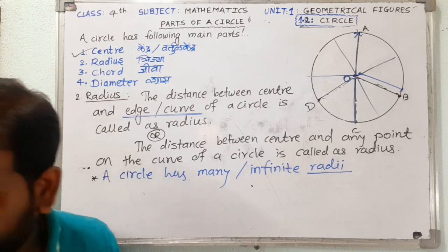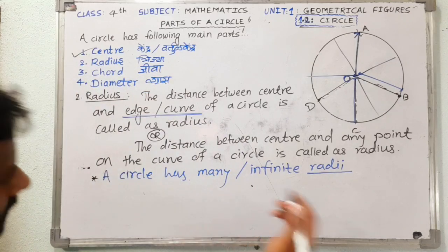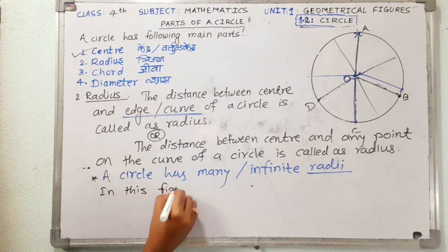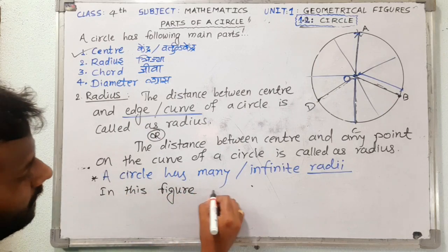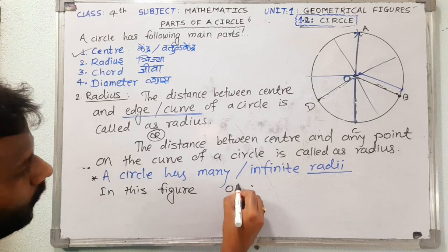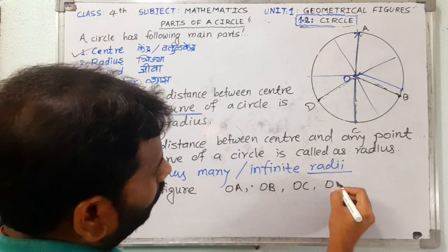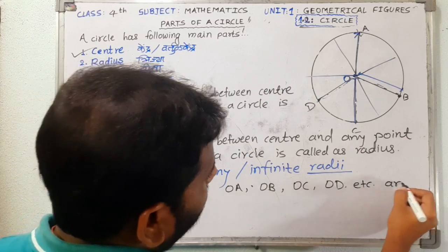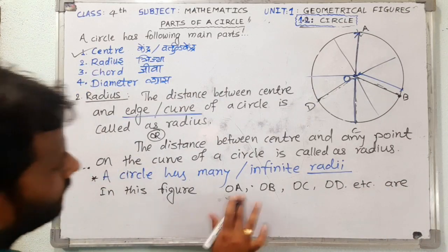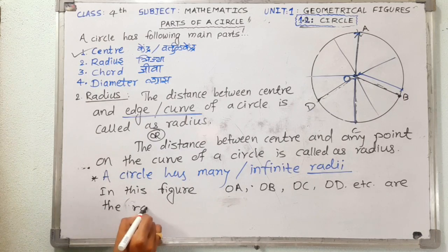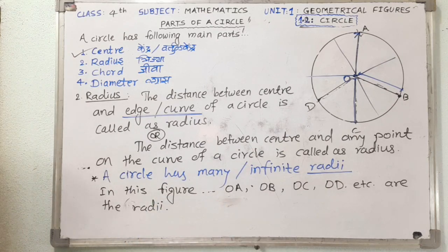In this diagram, the radii are: segment OA, segment OB, then OC, OD, and so on. These are the radii of the circle. Radii is the plural of radius.